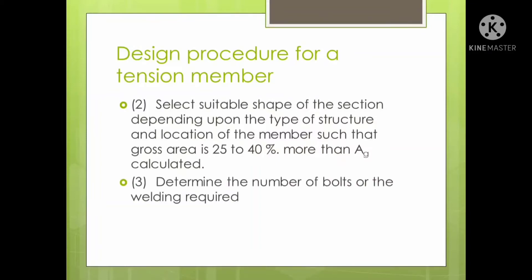Next, determine the number of bolts or the welding required — this is the design of connections for tension member joints. It can be a bolted or a welded connection. For a bolted connection, you decide the diameter of bolts, number of bolts, and pitch. For a welded connection, you consider the length of the weld connecting the member to the gusset plate.